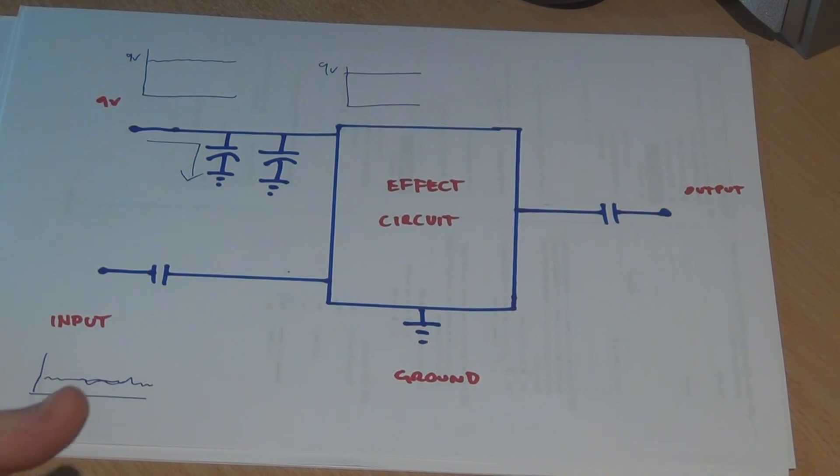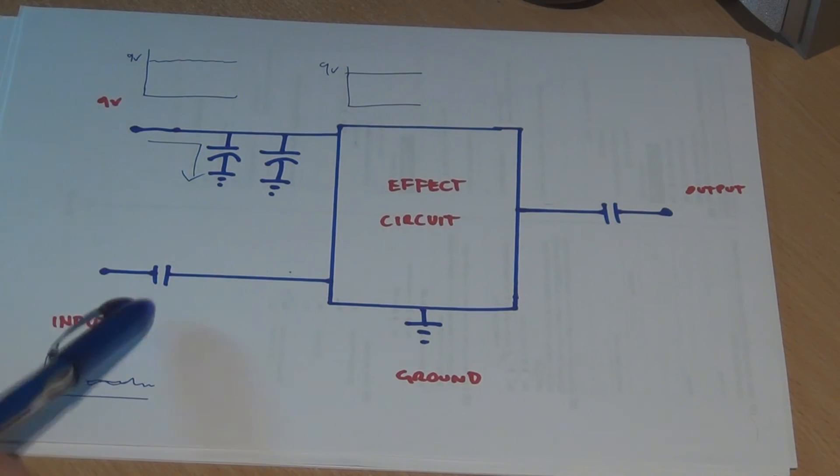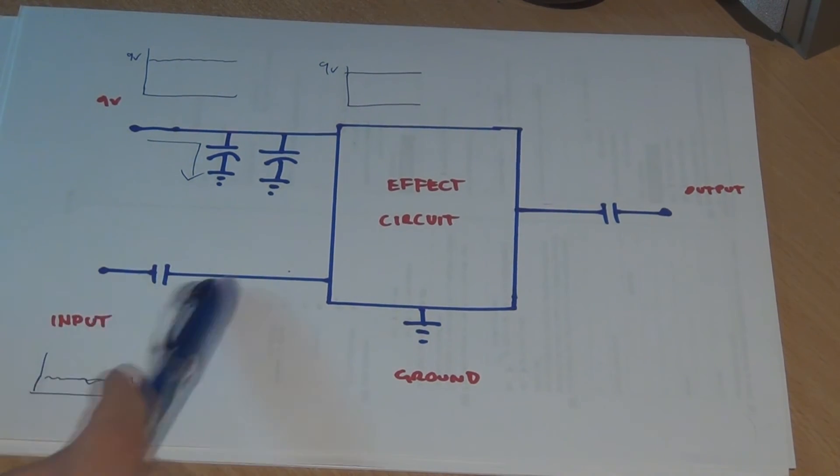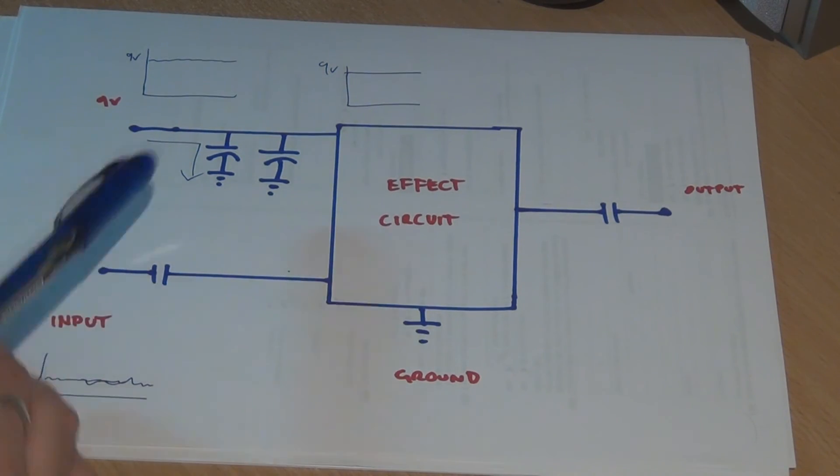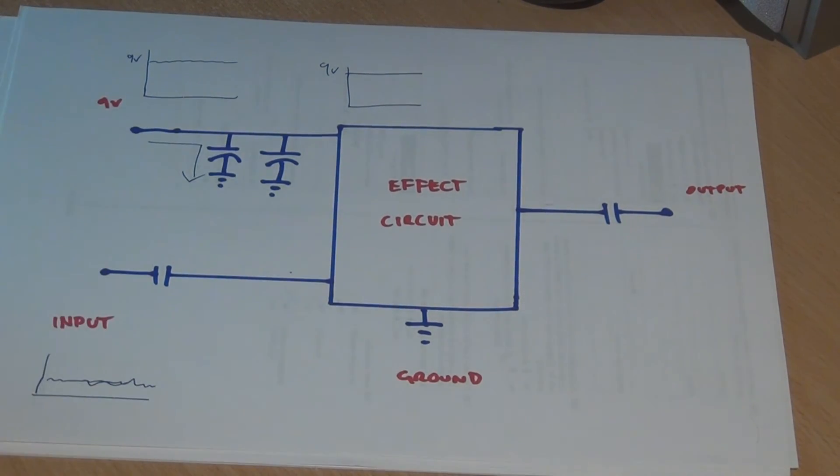So there's three uses for capacitors that hopefully you understand now. Increasing the value will let more bass through when it's wired in this particular configuration. It'll also block DC. And when it's wired in this configuration, it'll send AC to ground.